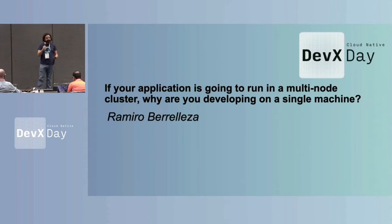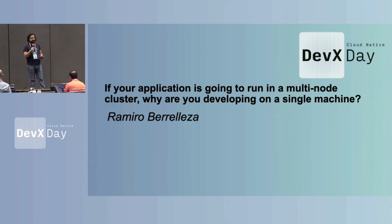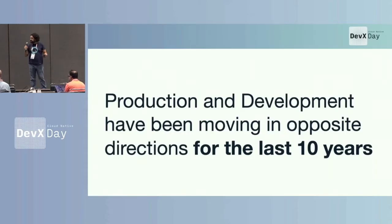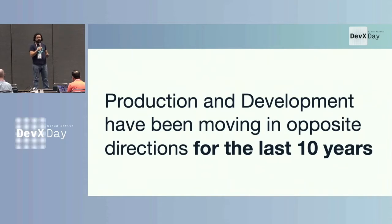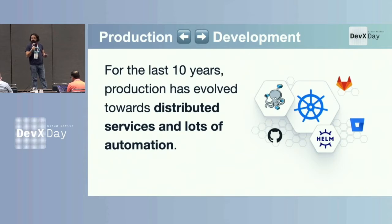I'm also super excited we have a DevX Day. I think we've been focused on the DevX world for a while, so it's really cool to see more and more companies investing in this and really recognizing it as something super important for team efficiency. My talk is in the same line as the InfluxDB team's talk: if your application is going to run on a multi-node cluster, why are you still developing on a single machine? Production has evolved in the last 10 years — VMs, containers, Kubernetes, GitOps — moving fast towards a world where microservices are distributed, everything is heavily automated, and meant to scale horizontally.